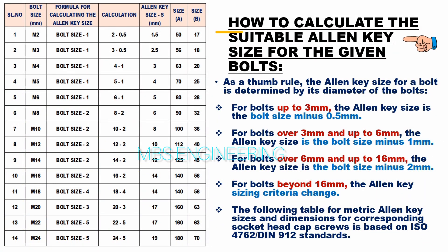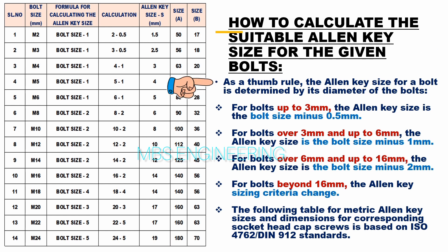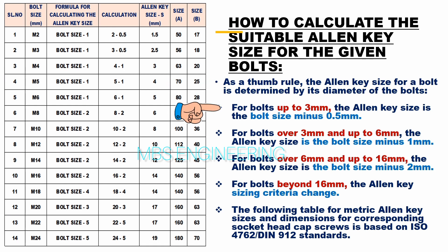We will understand how to calculate the suitable allen key size for the given bolts. As a thumb rule, the allen key size for a bolt is determined by its diameter. For bolts up to 3 mm, the allen key size is the bolt size minus 0.5 mm.